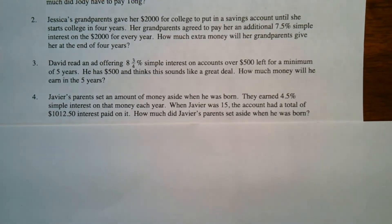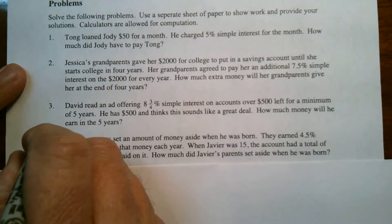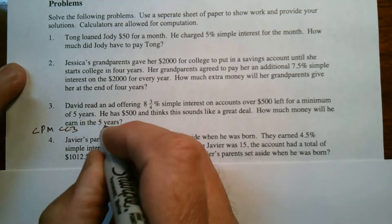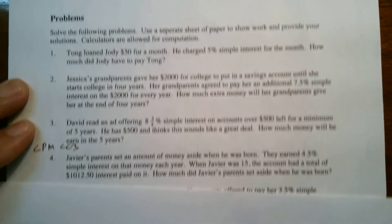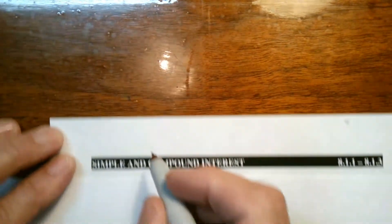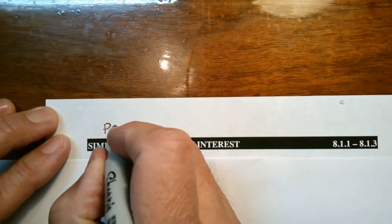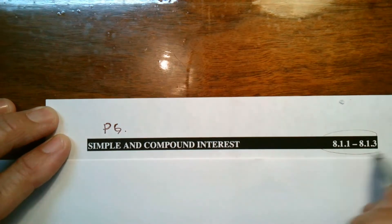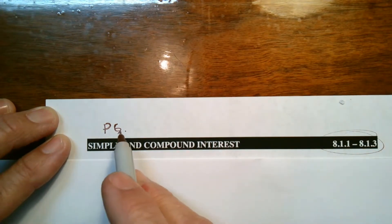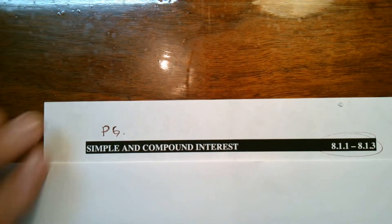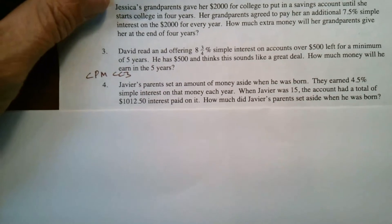So I'm taking these questions, a couple of these questions from CPM's course three. This is one of those parent guides, specifically the parent guide about chapter eight, simple and compound interest. Okay, so I'm going to look at number four and number 10.